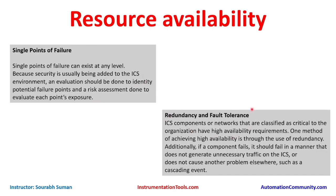For redundancy and fault tolerance, once all single point failures are identified, ICS components or networks classified as critical to the organization have high availability requirements. One method of achieving high availability is through the use of redundancy. For example, if a server is critical and has only one power supply, add a second power supply or a power switch with two sources that can converge to a single supply, or add an additional power supply if it is a modular server.